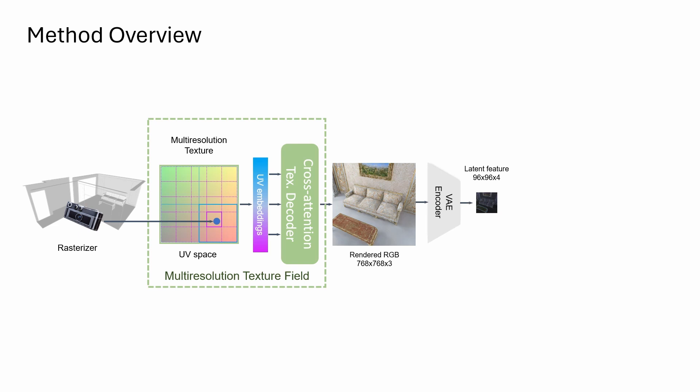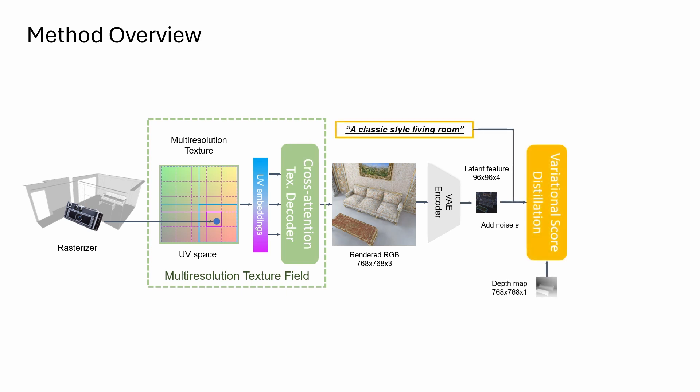Afterwards, a pre-trained VAE encoder maps the rendered RGB image to latent features. We use the latent feature to compute the variational score distillation loss via a pre-trained depth-to-image diffusion model. The gradients are backpropagated to the multi-resolution texture field to update the weights.